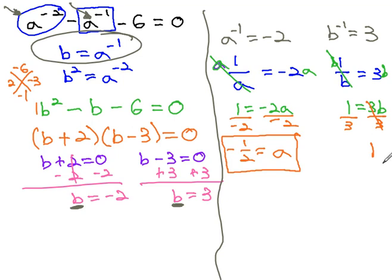Oops, why do I have a and b here? What did I do wrong? They should both be a, shouldn't they? a to the negative 1 equals 3.